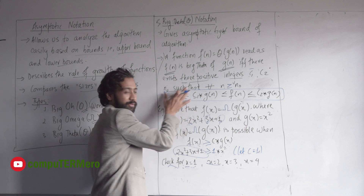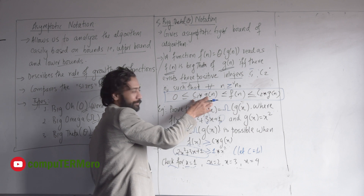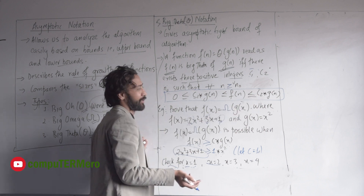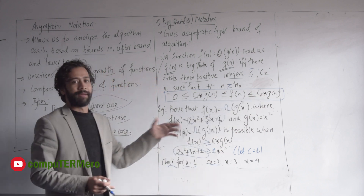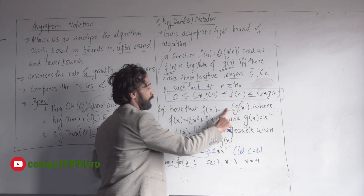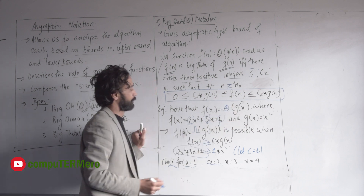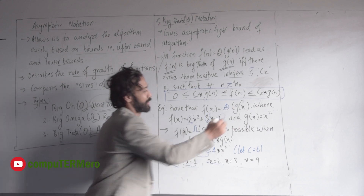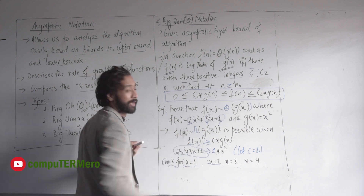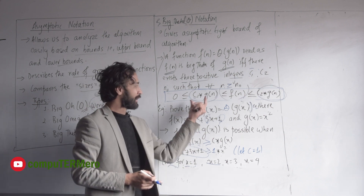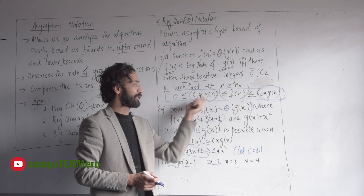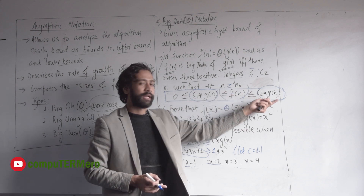That is f(n). The c2 is another constant. You have to satisfy both sides: f(n) is bounded by c1 times g(n) from below and c2 times g(n) from above. This is the three-part relationship: c1 times g(n), f(n), and c2 times g(n).